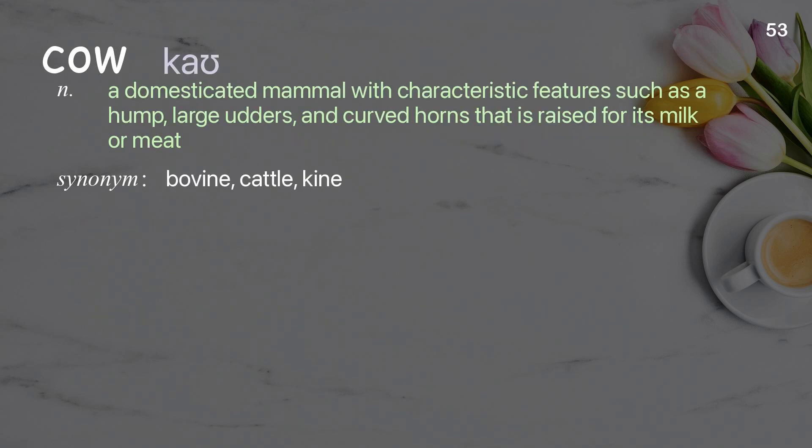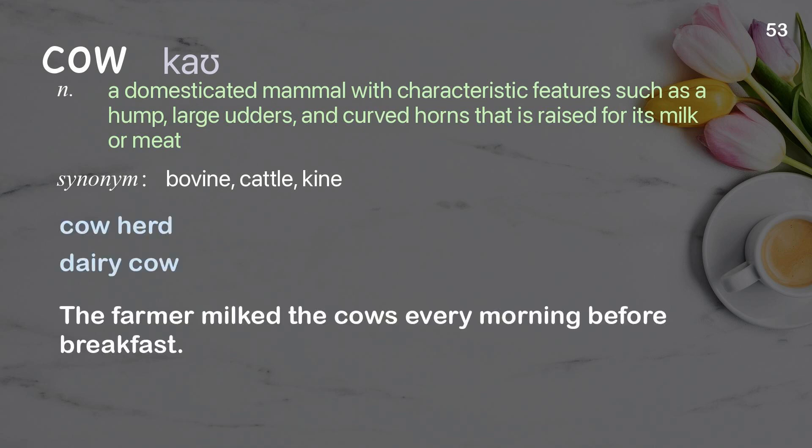Cow: a domesticated mammal with characteristic features such as a hump, large udders, and curved horns that is raised for its milk or meat. Examples: cow herd; dairy cow. The farmer milked the cows every morning before breakfast.